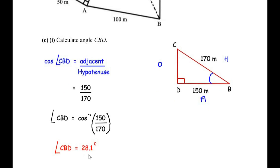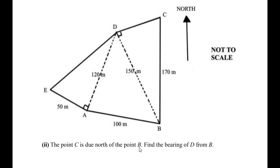Now the second part of sub-question C: point C is due north of point B — find the bearing of D from B. Since C is due north of B, there is a straight line pointing north from B towards C. When finding a bearing, always start at the north line of the point in question — here, point B — and move clockwise until you reach the line connected to point D.